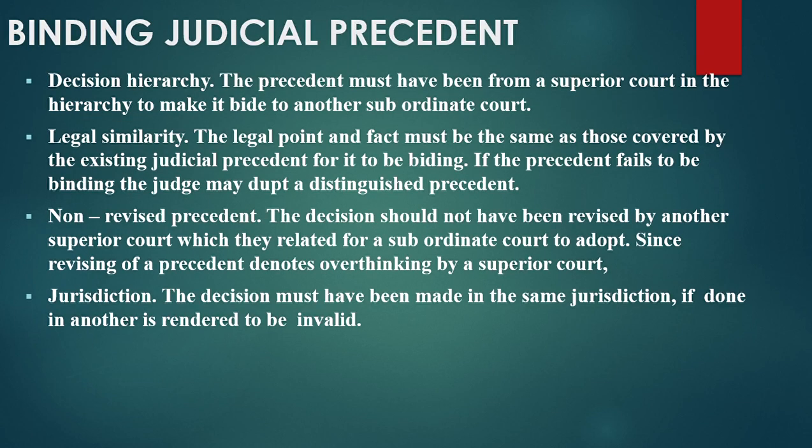What are the essentials of a binding judicial precedent? One of them is decision hierarchy. The precedent must have been from a Superior Court in the hierarchy to make it binding to another subordinate court. So for a precedent to be binding, it must originate from a Superior Court to a Subordinate Court.